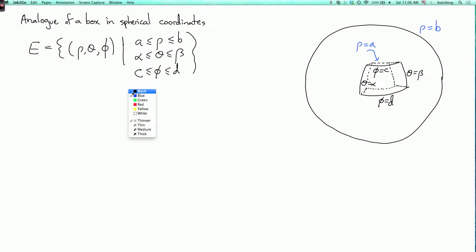So what's the formula for an integral? The triple integral over E of a function f with respect to volume is the integral as phi goes from c to d, and theta goes from alpha to beta, and rho goes from a to b of f. And now there's a new magnification factor, which in spherical coordinates is rho squared sine phi.